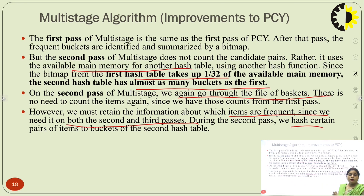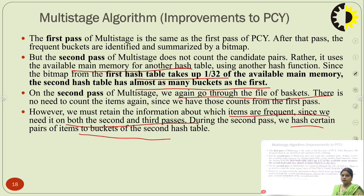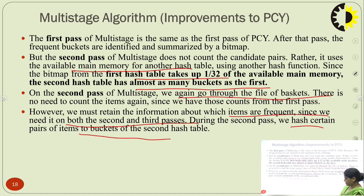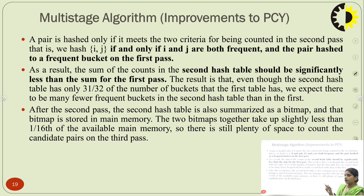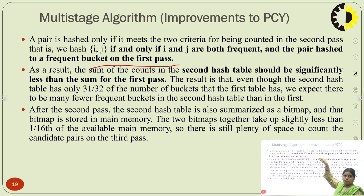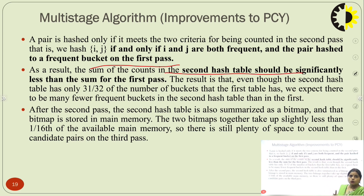During the second pass we only hash certain pairs of items to the buckets of the second hash table — not all pairs. A pair (i,j) is hashed only if it meets 2 criteria: both i and j must be frequent items, and the pair must have been hashed to a frequent bucket in the first pass. If these two conditions are met, then a pair is hashed. As a result, the sum of the counts in the second hash table should be significantly less than the sum from the first pass.